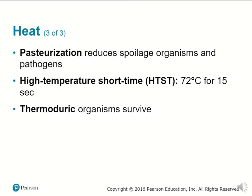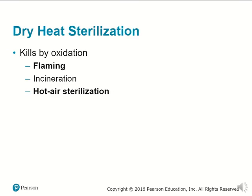Other ways of using heat include pasteurization, which reduces the amount of spoiling organisms and pathogens in food. This includes high-temperature short-time factors, where a high temperature is applied over a short amount of time. There are thermoduric organisms that can survive this process. Dry heat sterilization kills by oxidation; examples include flaming, incineration, or using heavily heated hot air to sterilize surfaces.